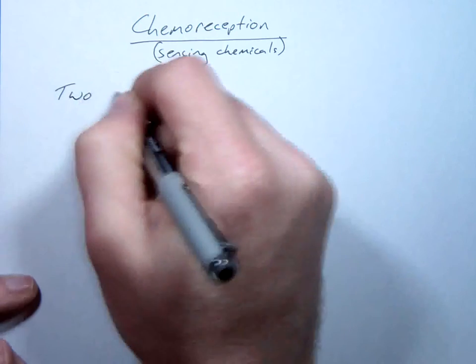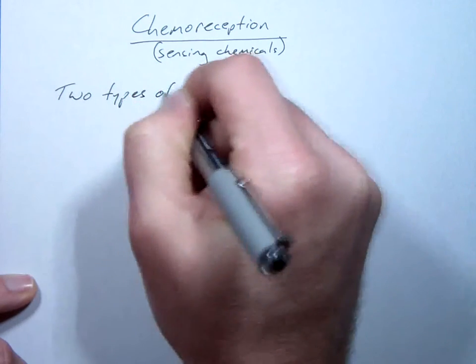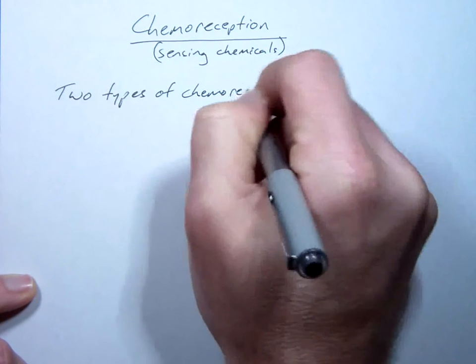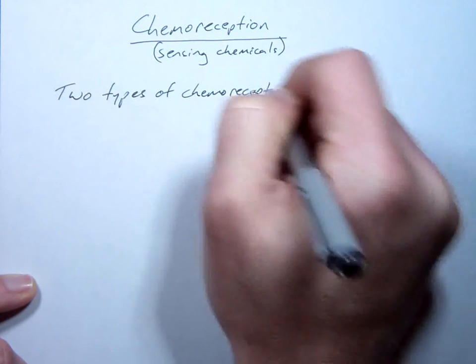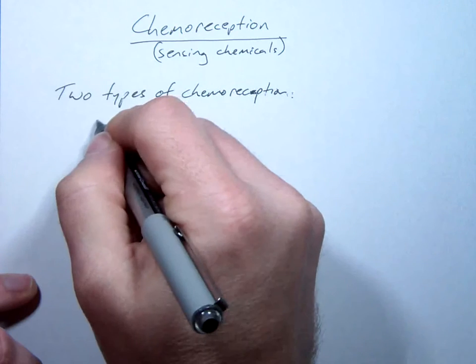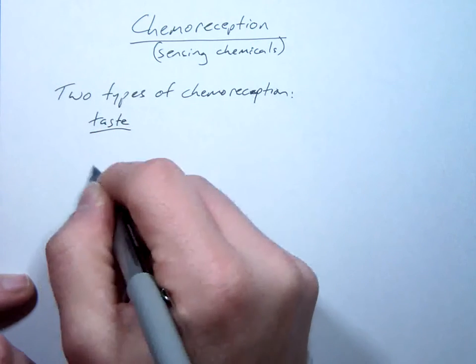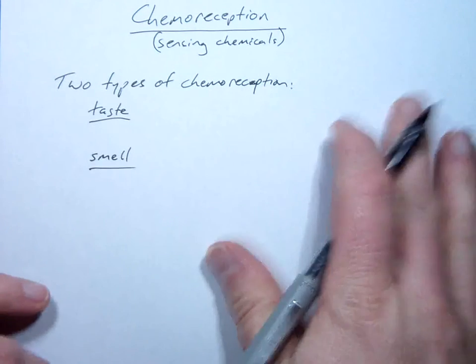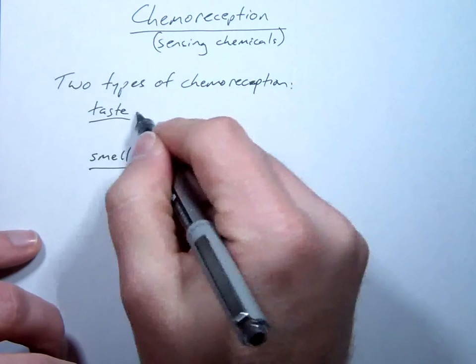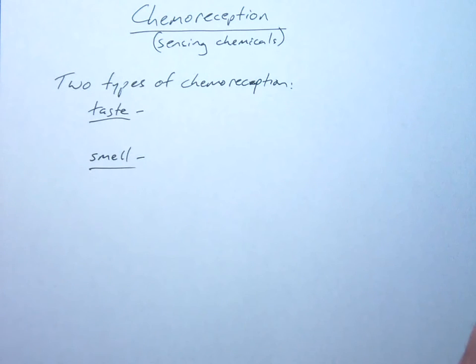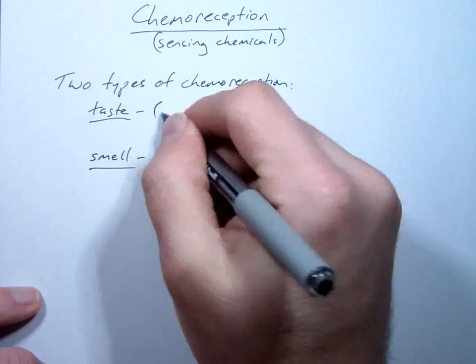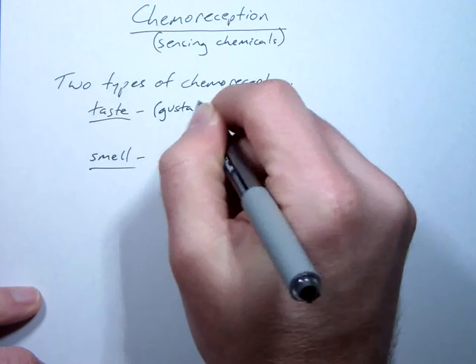So there's two types of chemoreception. Taste and smell. Because we need scientific terminology, we're not satisfied with small words. Taste is also known as gustatory. Things referred to are gustatory. Taste is gustation.